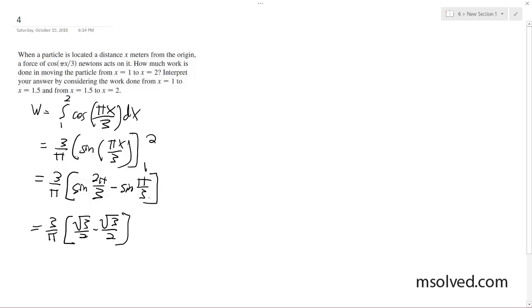Because sine of 2 pi over 3 equals sine of pi over 3, which equals square root of 3 over 2. It's opposite over hypotenuse. So they end up both being square root of 3 over 2. Zero Newton meters. So zero work done for from 1 to 2.